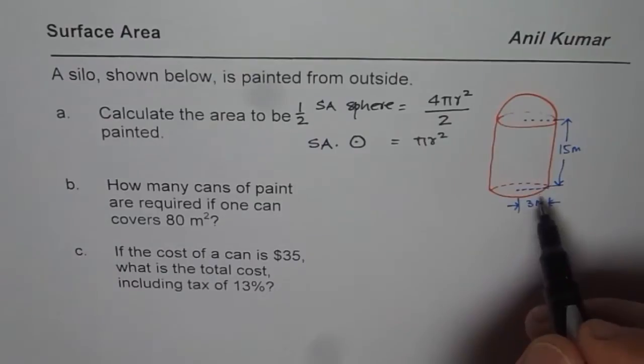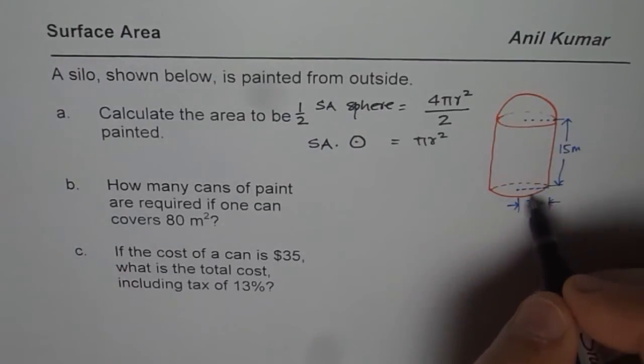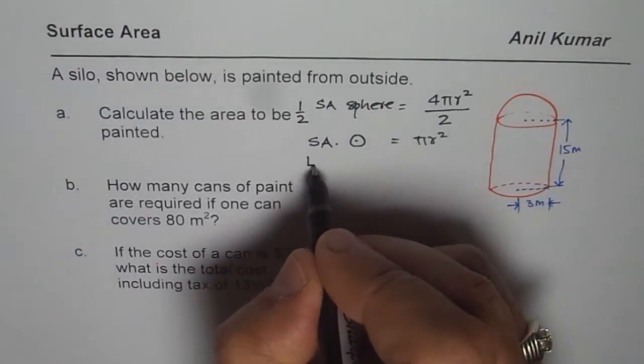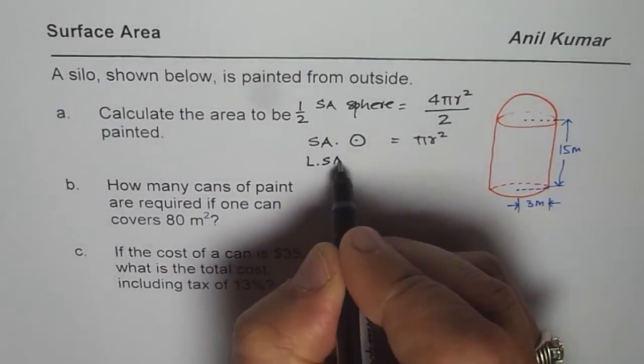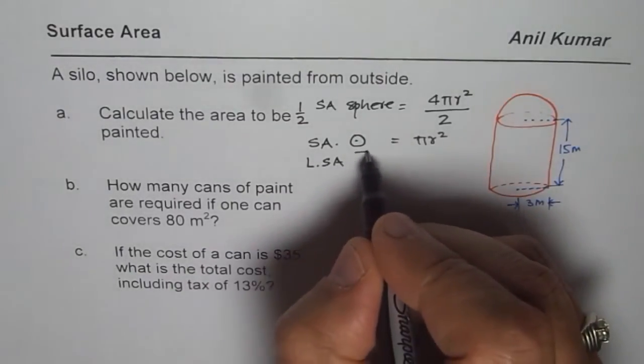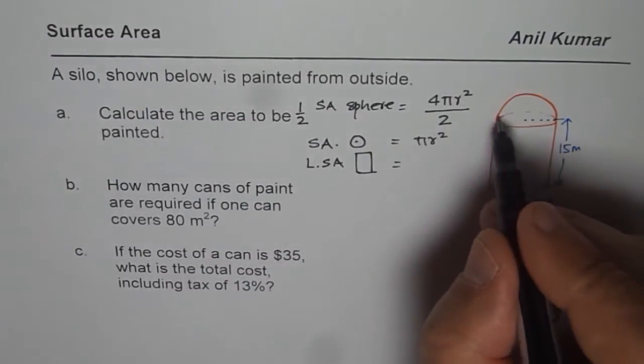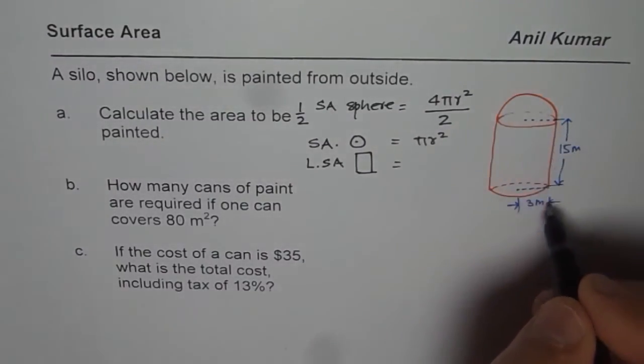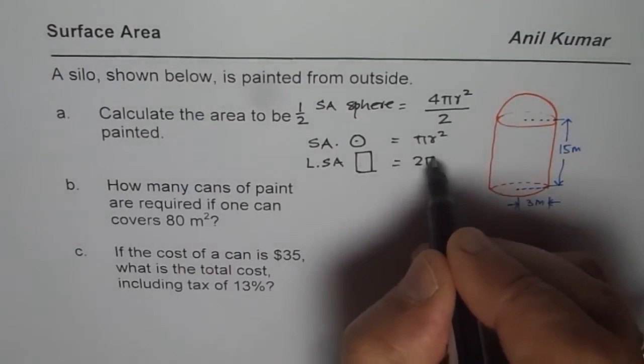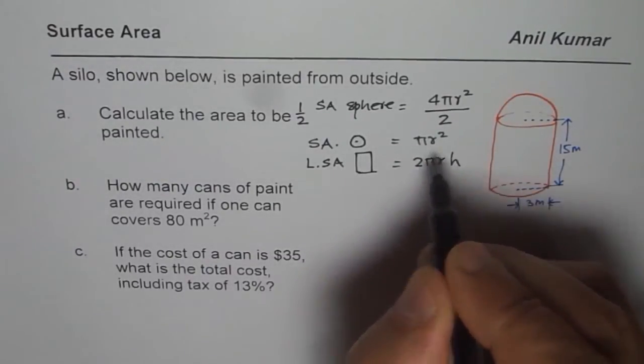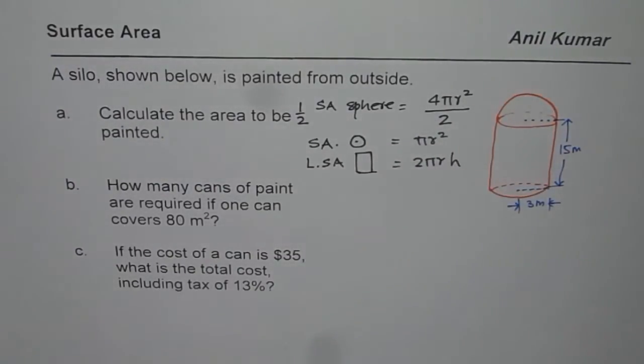Then we have the lateral surface area of the cylinder. This portion is 2πr times h, where 2πr is the circumference and h is the height. So that is the surface area of the cylinder.